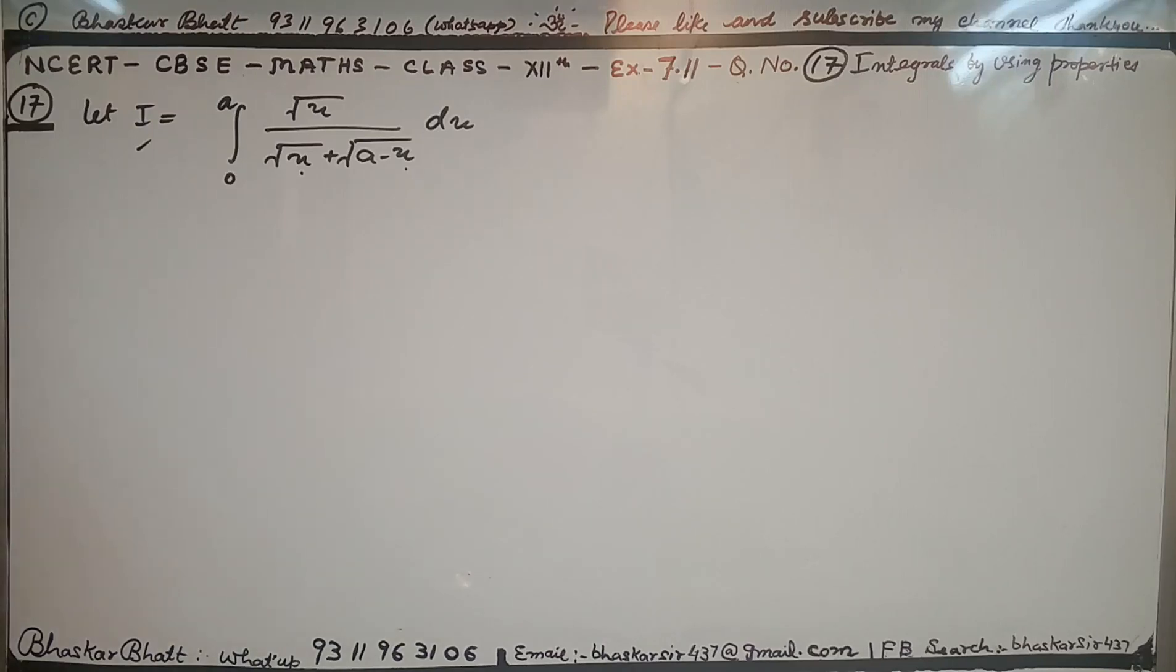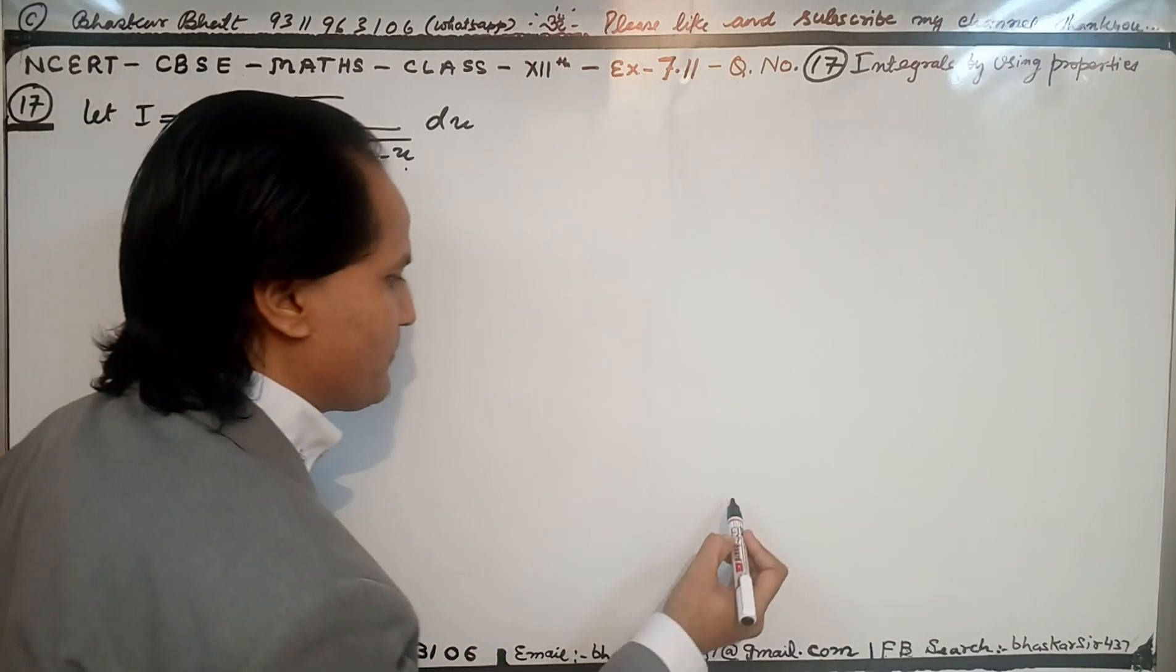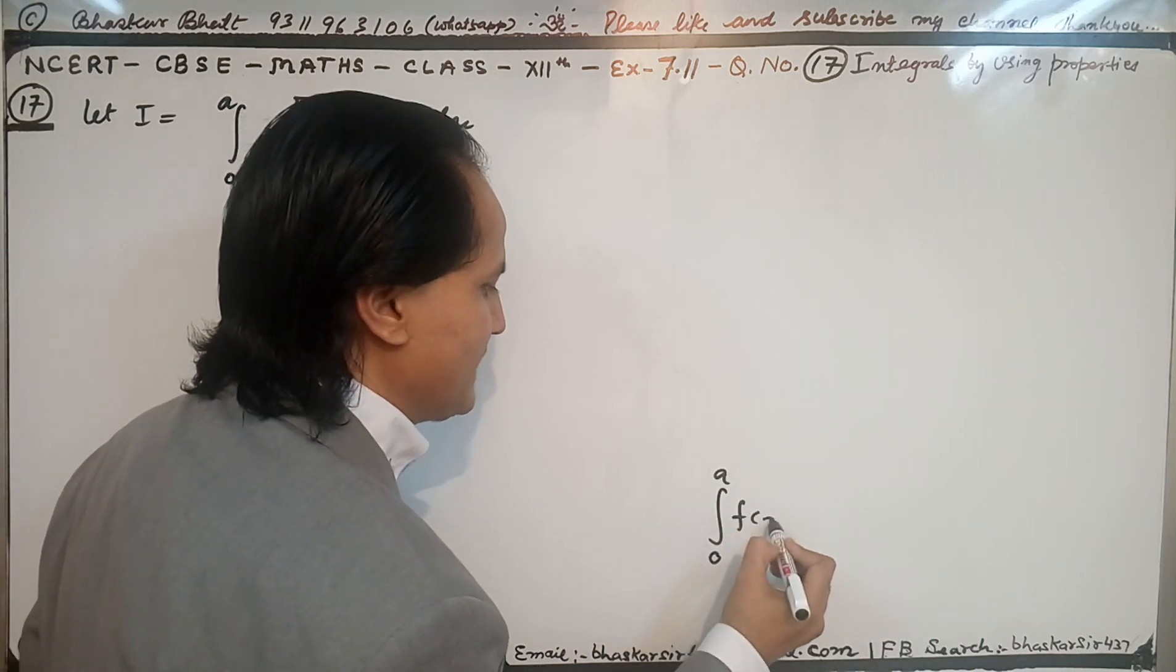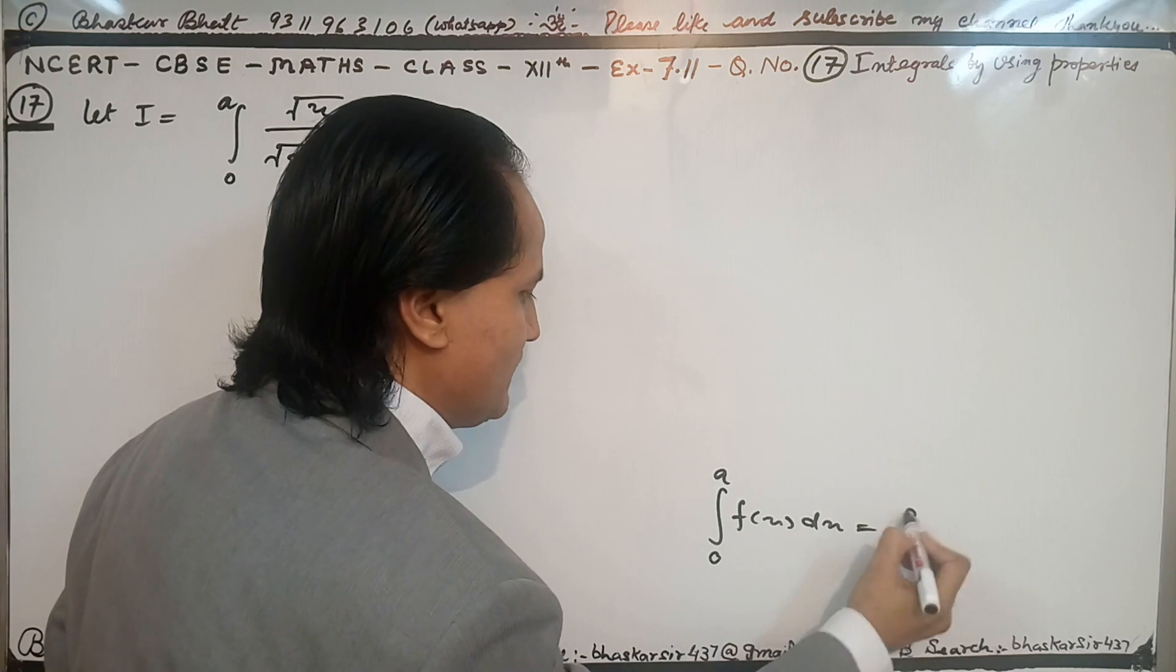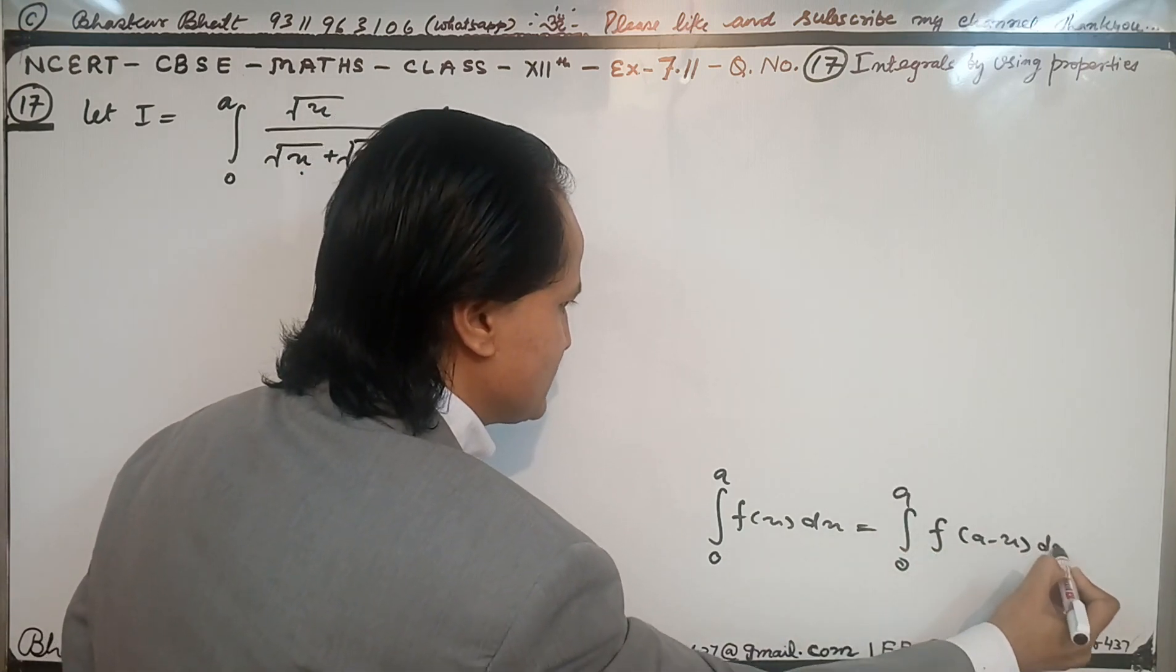Now we are starting question number 17 from exercise 11. This is a very easy question where we can use the property: integration from 0 to a of f(x)dx is equal to integration from 0 to a of f(a minus x)dx.